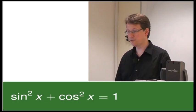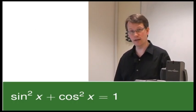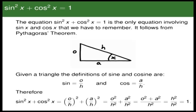Let's have a look at that fundamental equation: sine squared x plus cosine squared x equals 1. This equation is the only equation involving sine x and cosine x that we have to remember. It actually follows from Pythagoras' theorem. If we take a right-angled triangle and label the angle x, with the opposite, the hypotenuse, and the adjacent sides, then the definitions of sine and cosine are: sine is opposite over hypotenuse, cosine is adjacent over hypotenuse. So we take sine squared x plus cosine squared x.